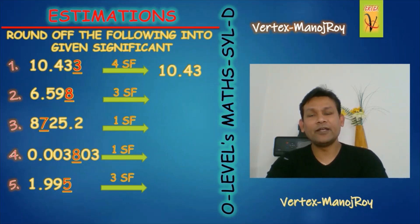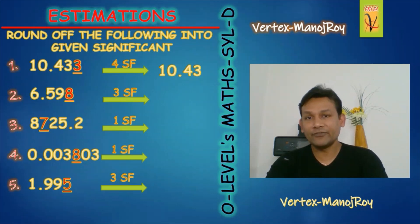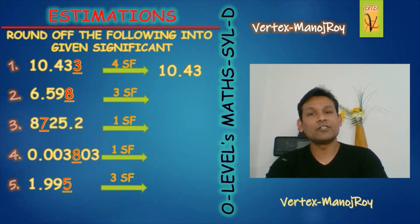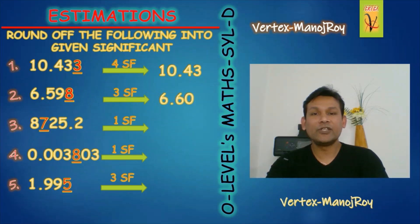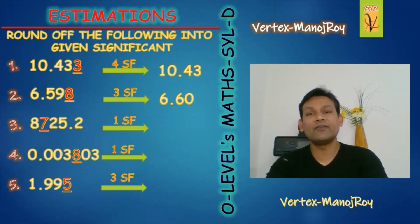Next: 6.598 into three significant figures. The fourth number — 8 — should be dropped. It is more than five, so drop it and add one to the previous number. The previous number is 9, so consider 59, which becomes 60. The right answer is 6.60, because all zeros after the decimal are significant when the number before the decimal is non-zero.